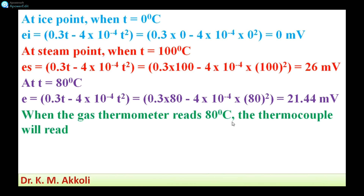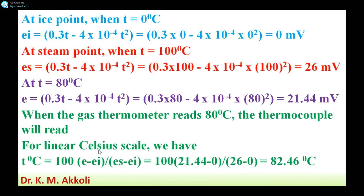Now, to find what the thermocouple reads when the gas thermometer reads 80 degrees Celsius, we use the linear Celsius scale relationship: temperature in degree Celsius equals 100 multiplied by (E minus E_I) divided by (E_S minus E_I), where E is the EMF at 80 degrees Celsius, E_I is the EMF at ice point, and E_S is the EMF at steam point.